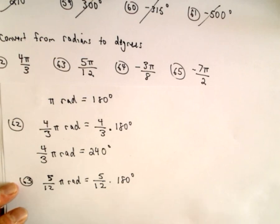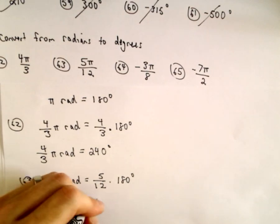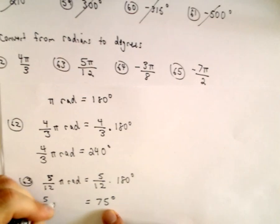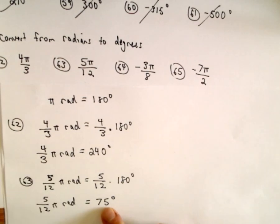Let's see, 180 divided by 12, that's going to be 15. 15 times 5 will be 75 degrees. So 5 over 12 pi radians is going to be 75 degrees.